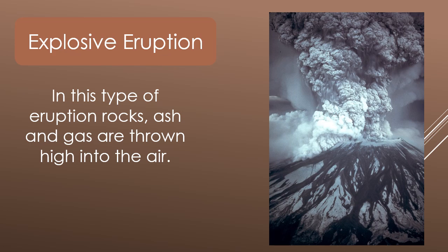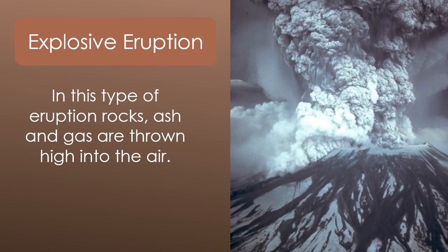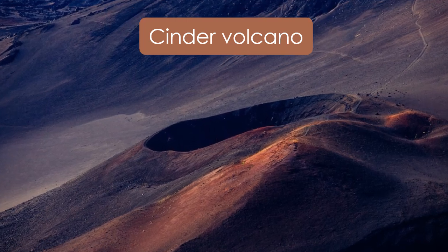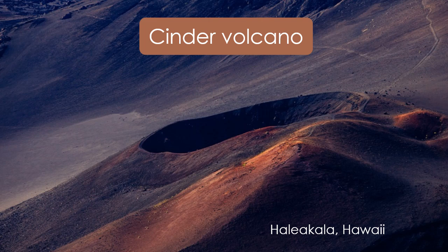In an explosive eruption, rocks, ash and gas are thrown high into the air. A cinder volcano is often cone-shaped with steep sides. This type of volcano has violent eruptions with lava thrown into the air. The lava falls down and cools where it lands, adding to the shape of the volcano.